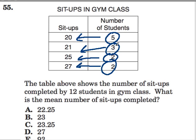That makes sense - only a few students could do the most amount of sit-ups. This is in a gym class with 12 students, and we add these up: 5 plus 3 is 8, 2 more is 10, and 2 more after that is 12. So here's our 12 students.